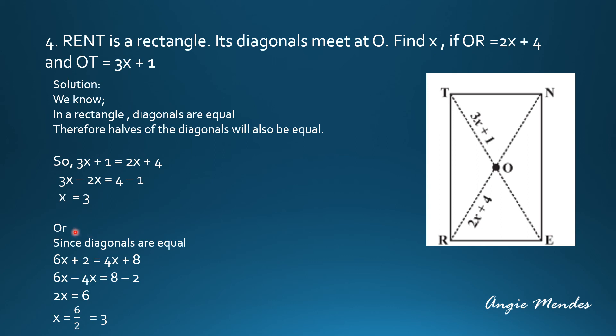This can also be done by considering the diagonals as equal. If you forget that the halves of the diagonals are also equal, you may consider the whole diagonal. Remember that diagonals are equal. So here what you have to do is, this is half of the diagonal TE. You will have to take TO is equal to 3X plus 1 and OE is also equal to 3X plus 1. So considering this property, we will get 6X plus 2 is equal to 4X plus 8 because we have added here 3X plus 1 plus 3X plus 1.